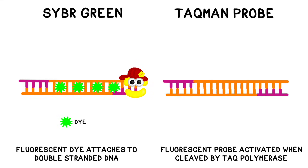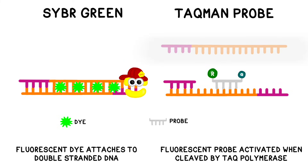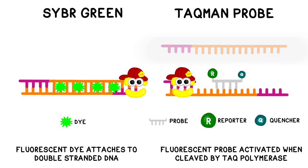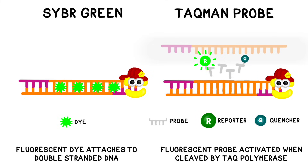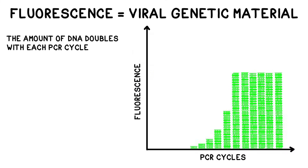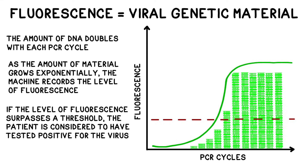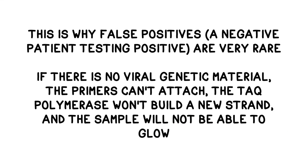In a TaqMan assay, short sequences called probes are added to the reaction mixture — they're built to temporarily attach to a specific target sequence, in this case a particular part of the viral DNA. The probe contains a glowing reporter component along with something called a quencher that keeps the reporter turned off as long as the two molecules are close together. As the Taq polymerase builds the new complementary strand, it will dislodge the probe and break it into pieces. With the reporter and the quencher separated, the reporter will start to glow. As the number of broken probes grows exponentially as the reactions progress, the sample will grow brighter and brighter. If the level of fluorescence surpasses a certain threshold, the patient is considered to have tested positive. Because the sample will only start to glow if viral genetic material is present, false positives are very rare — without viral RNA in the sample, the primers will not attach, the reaction will not proceed, and you won't get any glowing.